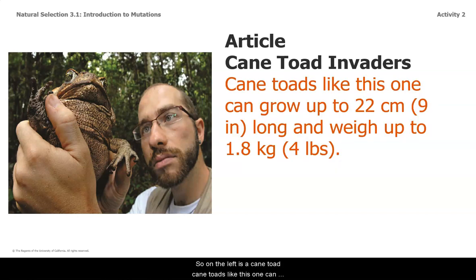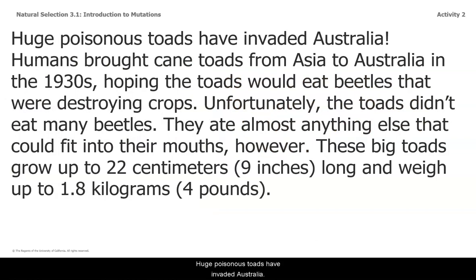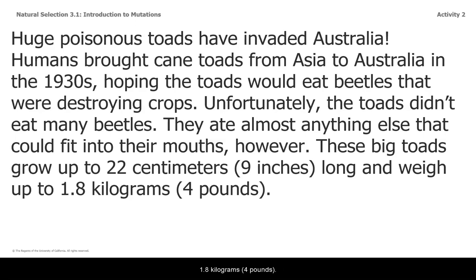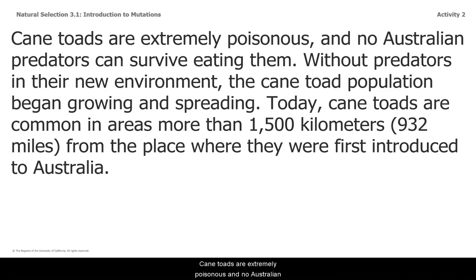On the left is a cane toad. Cane toads like this one can grow up to 22 centimeters, or about 9 inches long, and weigh up to 1.8 kilograms, or 4 pounds. Cane toads are extremely poisonous, and no Australian predators can survive eating them. Without predators in their new environment, the cane toad population began growing and spreading. Today, cane toads are common in areas more than 1,500 kilometers — 932 miles — from the place where they were first introduced to Australia.